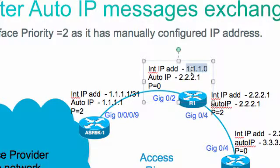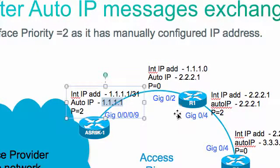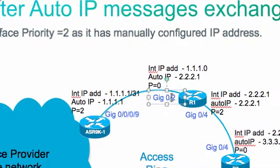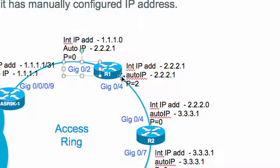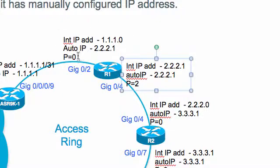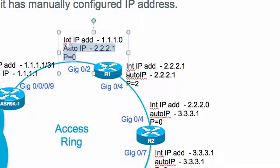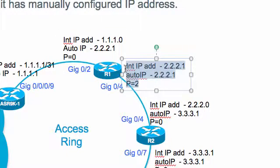R1 gig0/2 becomes a non-owner because it is receiving the IP address from the owner. R1 now knows that one of its ring interfaces, gig0/2, is a non-owner, so the other ring interface must be the owner interface. R1 will make that other ring interface the owner and assign it a higher priority.